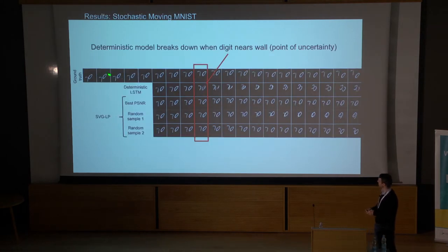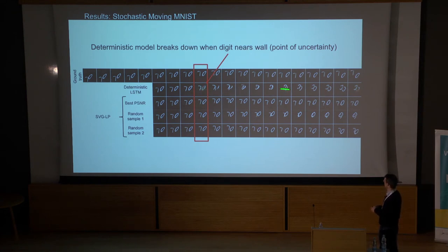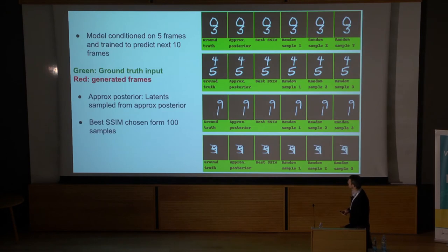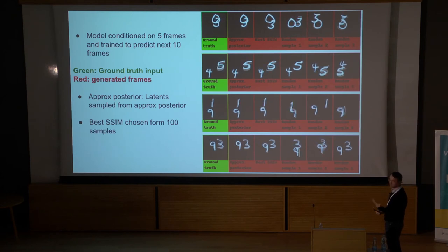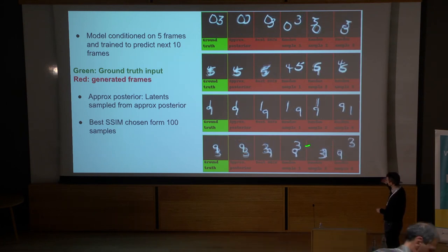Looking at it visually: you condition on the first five frames, and this is the true sequence going forward. A plain LSTM does pretty well actually, but when the digit hits the wall and starts changing direction — with inherent uncertainty — things get very blurry and digits lose their structure. Our model's samples, shown as two different bottom rows, are the same until a collision with the wall, then the digits move off in different ways while generally retaining the digit shape. When green means conditioning and red means prediction, these different samples look like plausible future sequences.